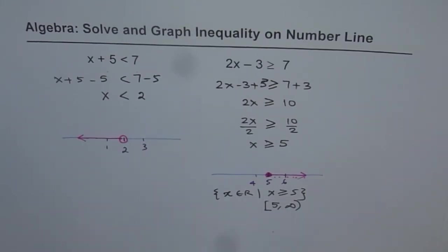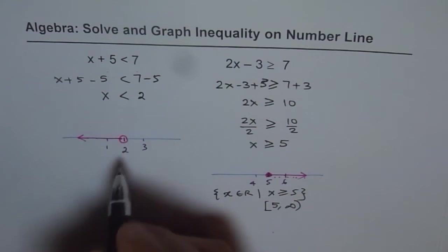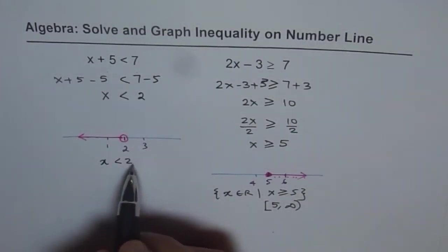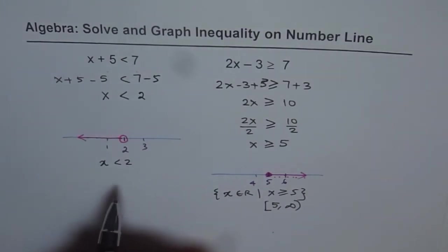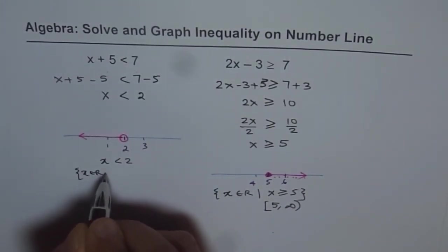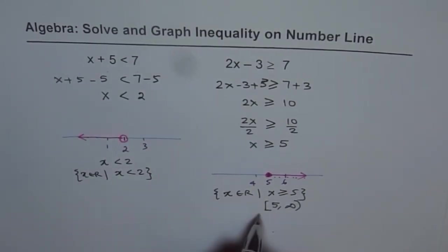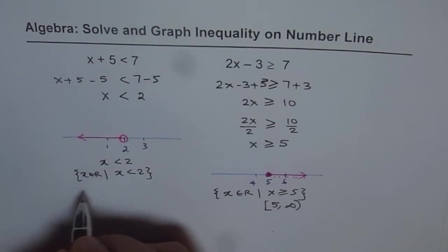Let me show you how to write the solutions for the first one in different notations. So the first, of course, we wrote, which is x is less than 2. Second, we have shown it on the number line. And then we can write in set builder form, which is x belongs to real numbers, so that x is less than 2. And then in interval notation, we could write this as from minus infinity to 2.